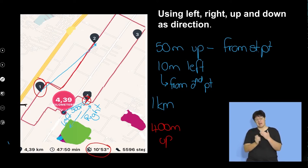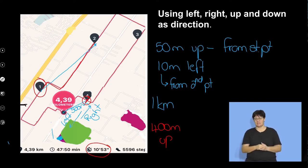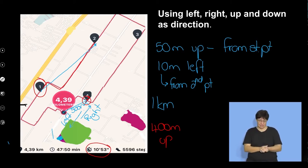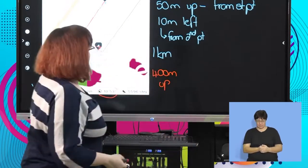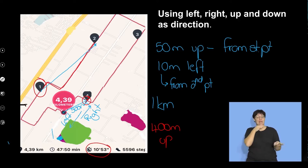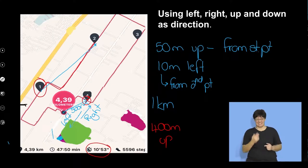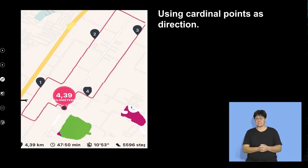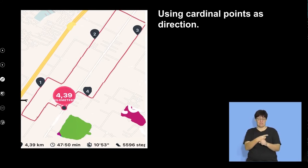She could have gone 500 meters slightly to the right, down, and ended up in the same position. She can't do that because there are roads and houses in the way. Describing this as left, right, up, down feels a little clumsy when there are lots of turns, so instead we can use the cardinal points — north, south, east, and west.